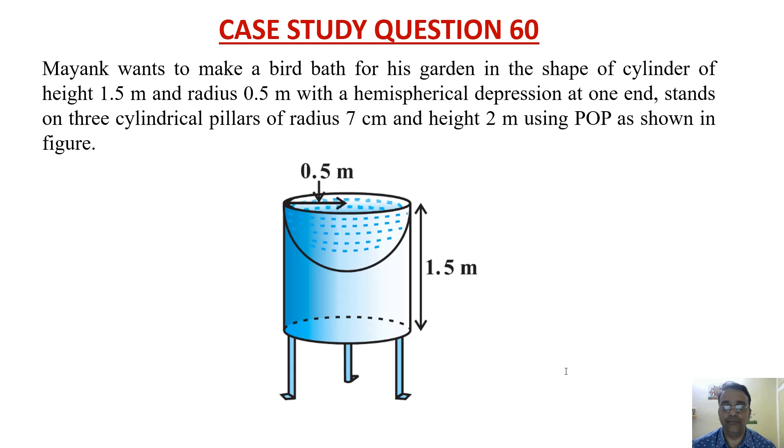Mayank wants to make a bird bath for his garden in the shape of a cylinder of height 1.5 meter and radius 0.5 meter with a hemispherical depression at one end, stands on three cylindrical pillars of radius 7 centimeter and height 2 meter using POP as shown in this figure.